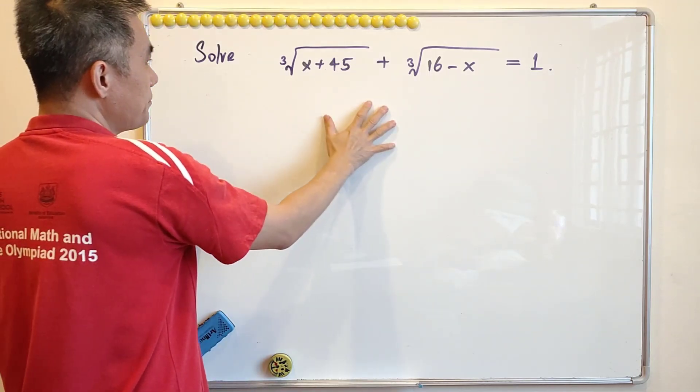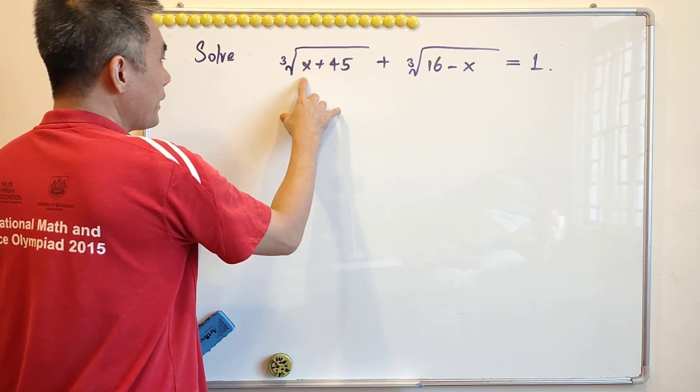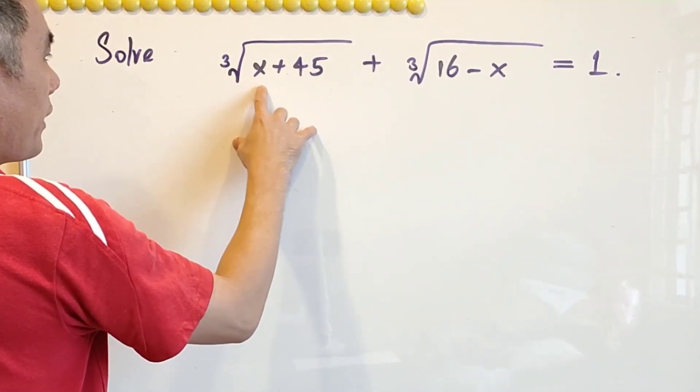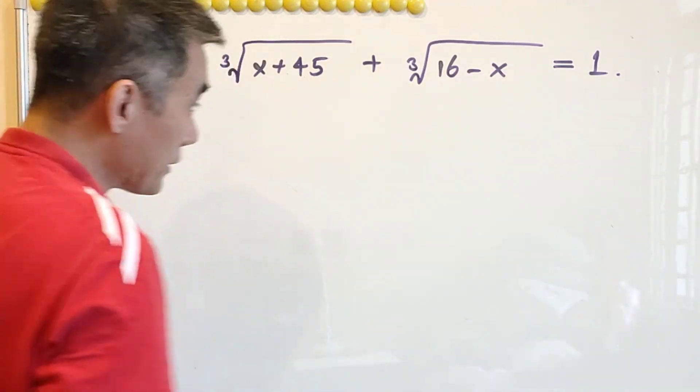For today, let's solve this simple algebraic question. We want to find the value of x such that the cube root of x plus 45 plus the cube root of 16 minus x equals to 1.